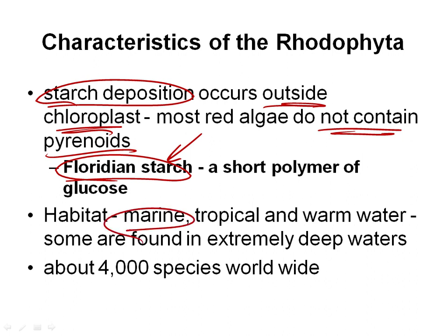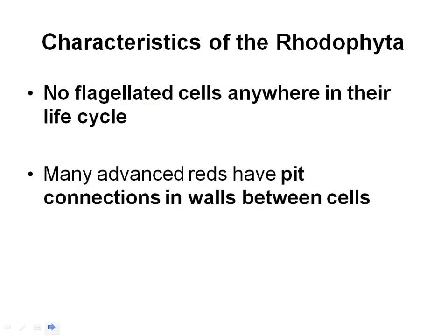The brown algae are going to be pretty cold water; red algae tend to be tropical. They can be found at extreme depths. About 4,000 species give a rough idea of the diversity — it's a very diverse group. We're going to do very few examples of it. It's a very diverse group of algae.